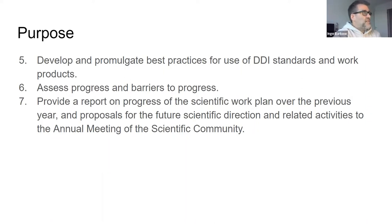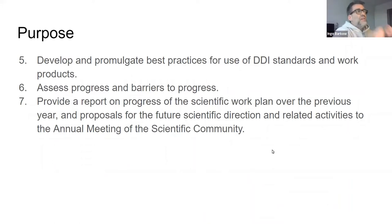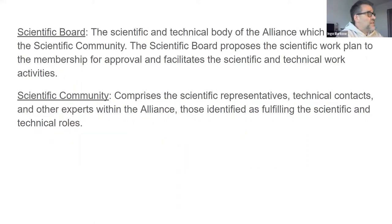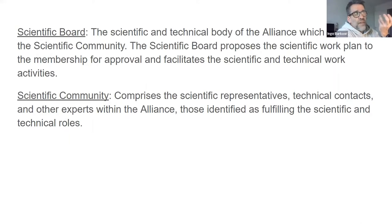The rest is more or less the same: development of best practices for the standards, assessing if there are any barriers to progress and how progress is running in different working groups or committees, and of course providing the report. This is basically all a function of the annual meeting — just like before, except now the whole scientific board, not just the vice chair and chair alone, goes to the annual meeting and reports about progress. We now have a new structure where the scientific board consists of much fewer people so that they can be active during the year, and we have the scientific community, which is the former scientific board.